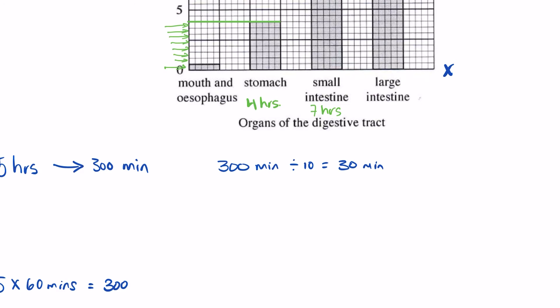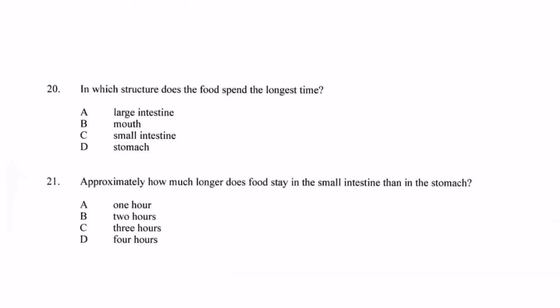Now we need to go back to the question and it says approximately how much longer does food stay in the small intestine than the stomach? The food spends seven hours in the small intestine and four hours in the stomach. So seven hours take away four hours is three hours. So the answer would be C.